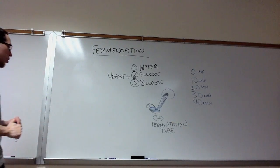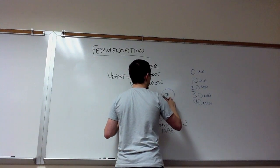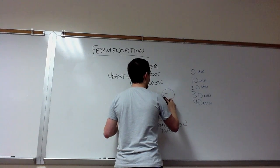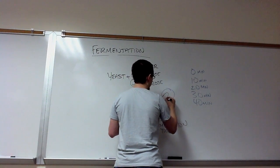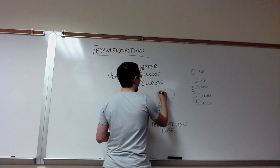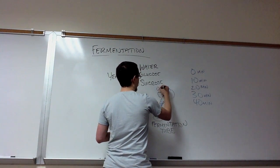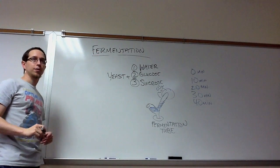But as time goes on and time progresses, what we'll start to see is large, empty space in the end of this tube. Both those bubbles and that space represent carbon dioxide, which is being produced as a byproduct of the process of fermentation.